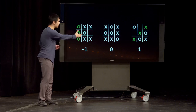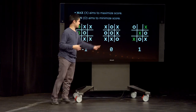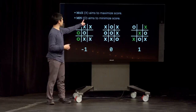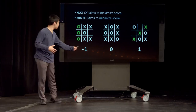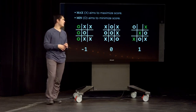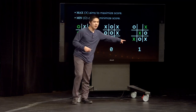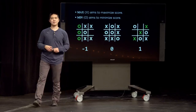Now each player has a goal. The X player, who we might also call the max player, aims to maximize the score. What's best for X is a score of 1, meaning X wins. But if X can't win, tying at 0 is better than losing at negative 1. Meanwhile, the O player — the min player — aims to minimize the score. Negative 1 is the best outcome for O. If negative 1 can't happen, tying the game is still better than X winning, which would be a loss for the O player.